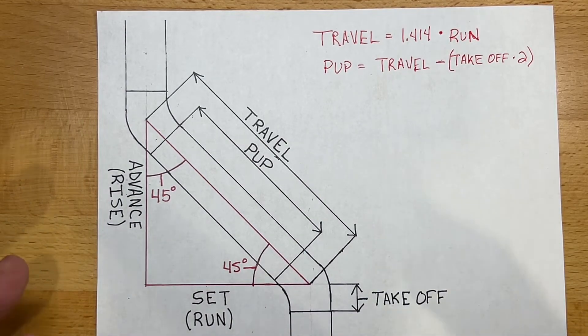Today we're going to be talking about 45-degree offsets in pipe, and we're going to hit on some other degrees as well.